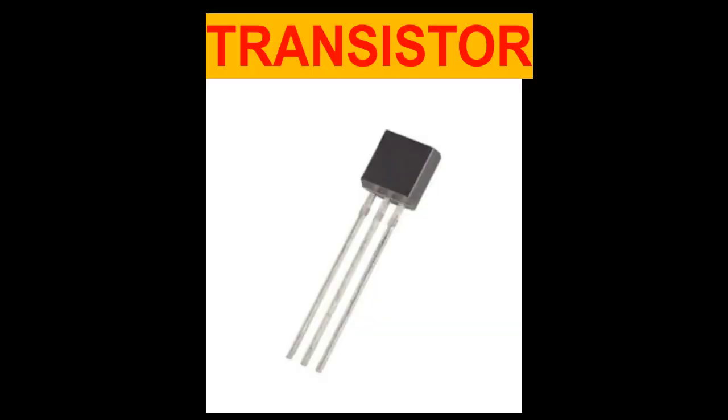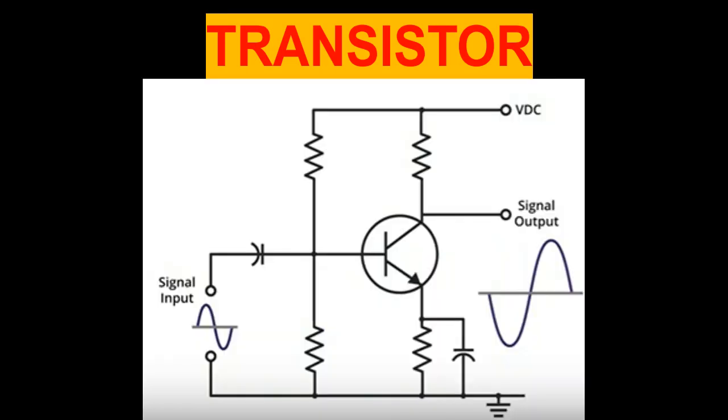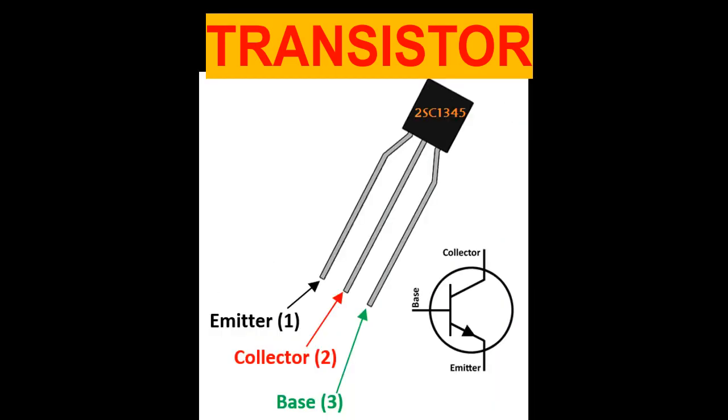The transistor is a semiconductor device which transfers a weak signal from low resistance circuit to high resistance circuit. A transistor is an electronic circuit found in a variety of circuits and is used to amplify or switch electronic signals or electrical power.